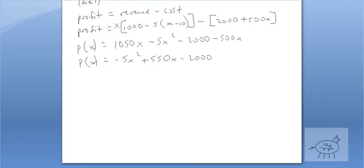Okay, and then we take the derivative of that. So it's going to be P prime of X is equal to negative 10X plus 550, okay? Because we're taking the derivative, because we're trying to find the extrema. We're trying to find the maximum profit, all right? Of course, we're going to set that equal to 0. So you get 10X equals 550, X equals 55.